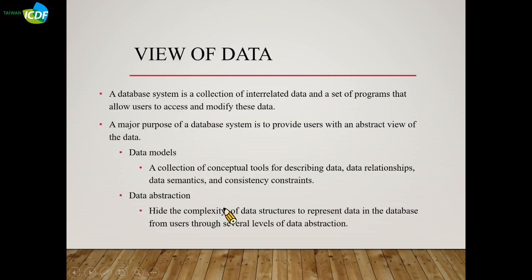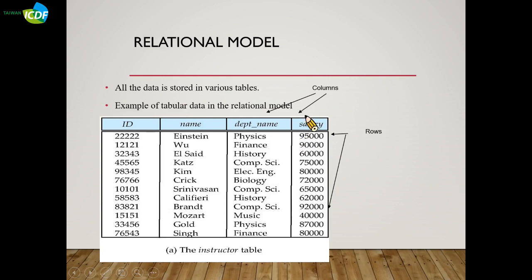Data abstraction hides the complexity of data structure to represent data in the database from users through several levels of abstraction. To demonstrate how to abstract data, I will take the example of relational models. In relational models, all the data is stored in tables. The tables can also be called relations, which is why it is called the relational model.